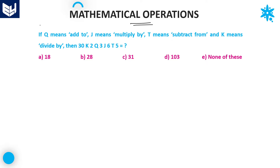Here is the first question in this session. Q means added to — Q means addition. J means multiplied by, so J is equal to multiplication. T means subtract from, so T is subtraction.